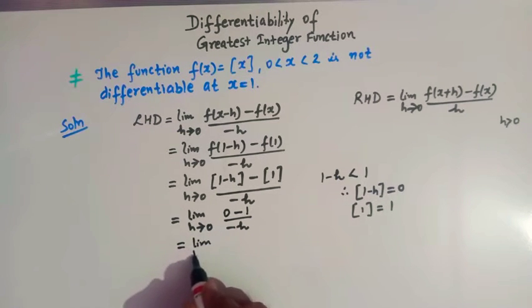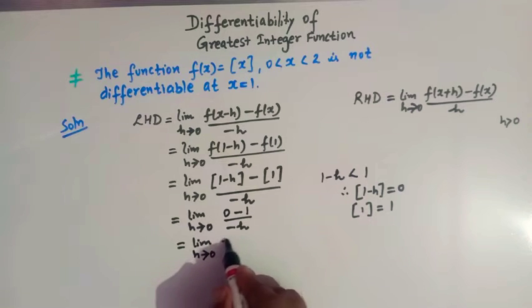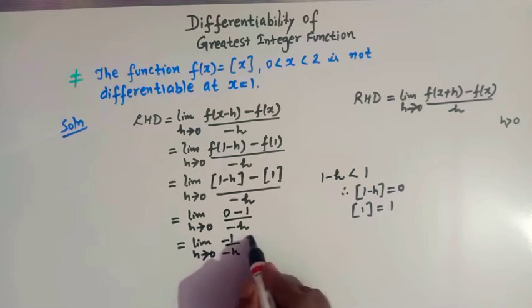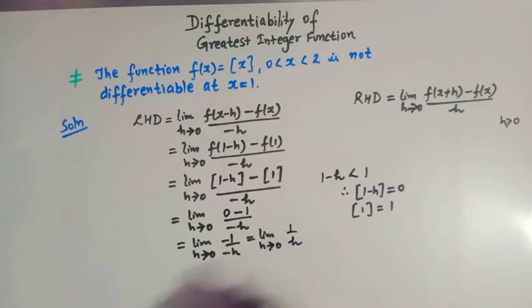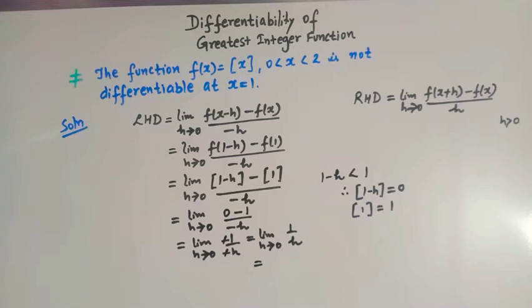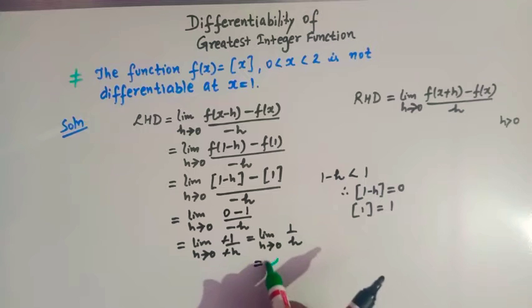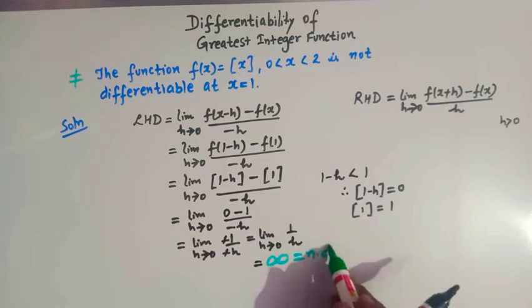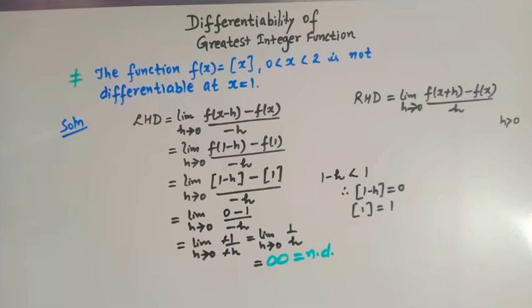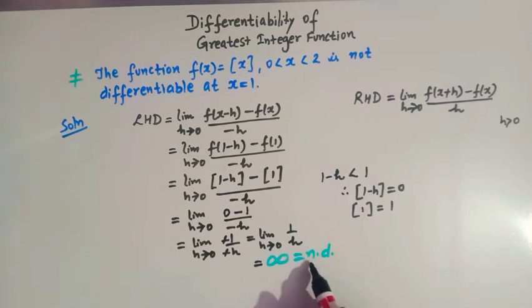So we have limit h tends to 0 of [0 minus 1] divided by minus h, which equals limit h tends to 0 of (minus 1) over (minus h), which simplifies to limit h tends to 0 of 1 over h. As h tends to 0, this equals infinity — it is not defined. Therefore, the left hand derivative is not defined.